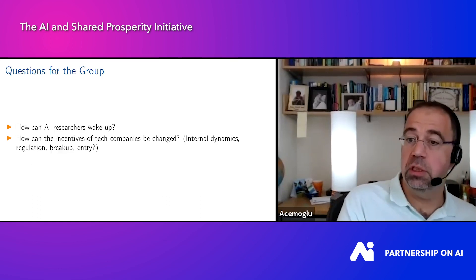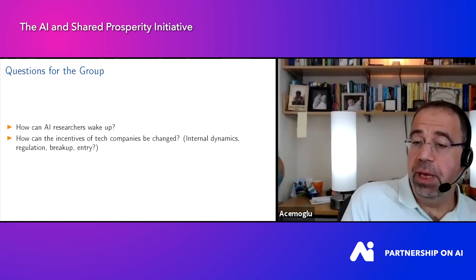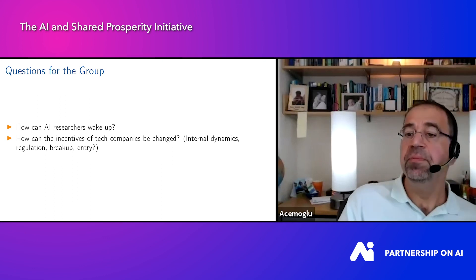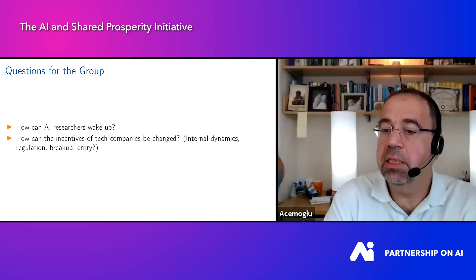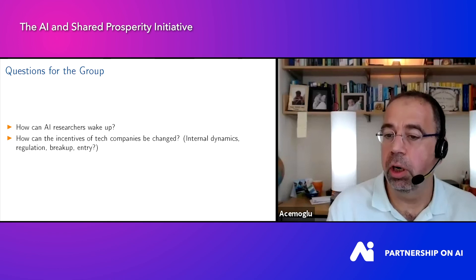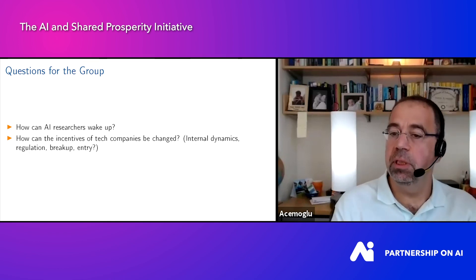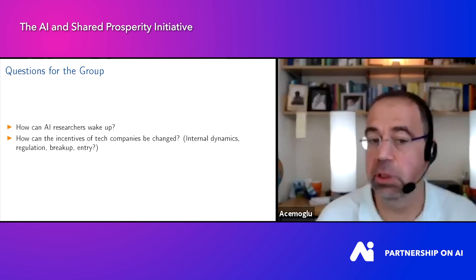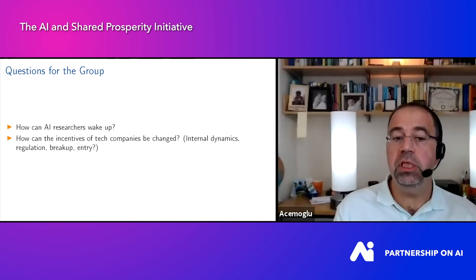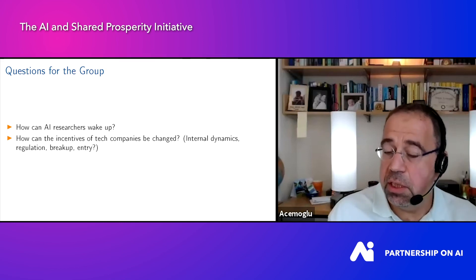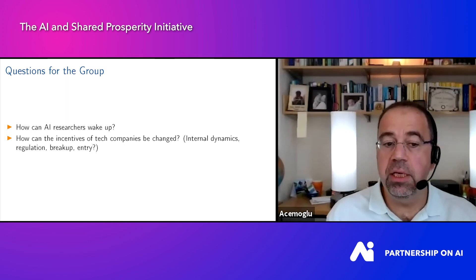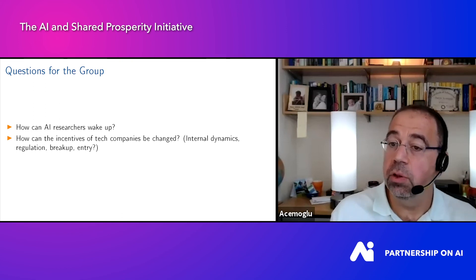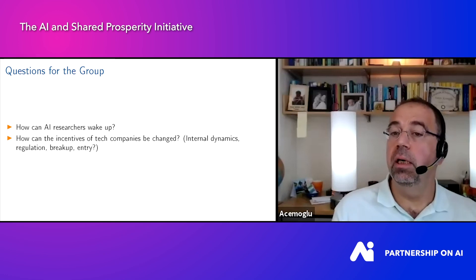In that context, I want to end with two questions for this group. If broad-based societal change is required, one important pillar will be AI researchers. My assessment as an outsider is that AI researchers are right now part of the problem: they do not see that they have a social responsibility. They do not see that they can do as much harm as good when they work on face recognition technologies, work with security companies that monitor for governments or corporations, or work without any concerns about eliminating humans even when that's not economically or socially desirable. We need AI researchers to wake up. How can we change the incentives and vision of tech companies — through internal dynamics, entry, regulation, or breakup? I cannot see a better group of people than this one to take on these challenges without prejudice and without inhibition. Thank you.